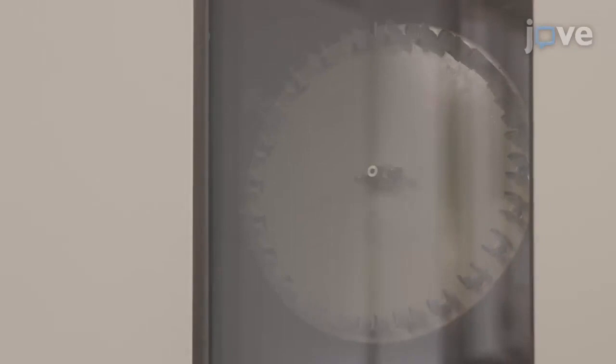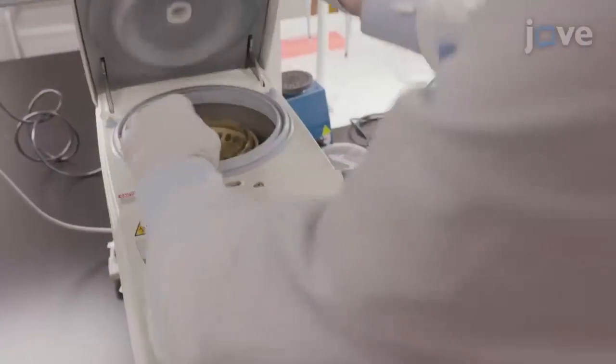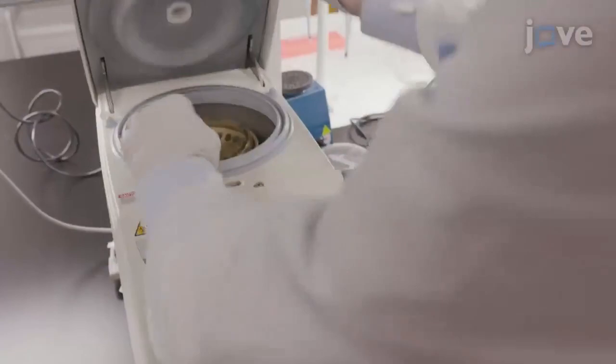Mix well by inverting the tube several times. Then rotate the sample for 30 minutes at 4 degrees Celsius. Centrifuge the sample at 13,000 times gravity for 4 degrees Celsius.